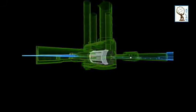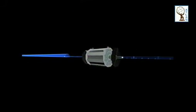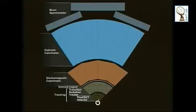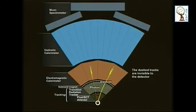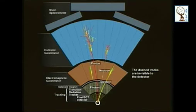We are continuing with the graphic reconstruction, still in the Atlas cavern — another representation of the collision events. This is just a representation, but the events are actually happening right now. These are the sub-detectors with the identification of the various particles resulting from the collisions.